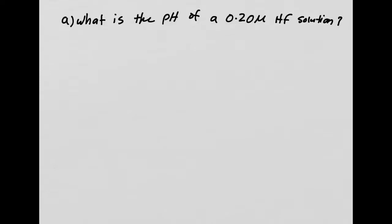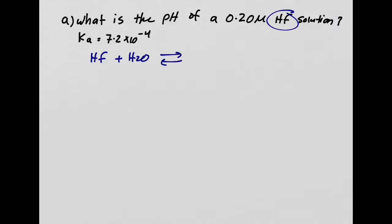Let's do the take-home problem together. Part one asked for the pH of an HF solution, and the Ka was given as 7.2 × 10⁻⁴. HF is a weak acid, so it undergoes hydrolysis. The equilibrium is: HF loses a hydrogen to become F⁻, and water acts as a base and accepts that hydrogen.